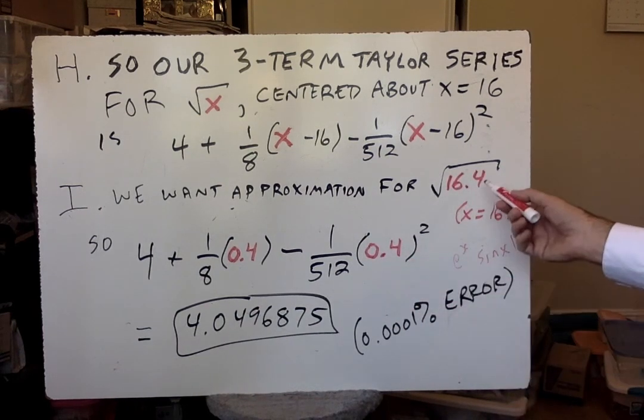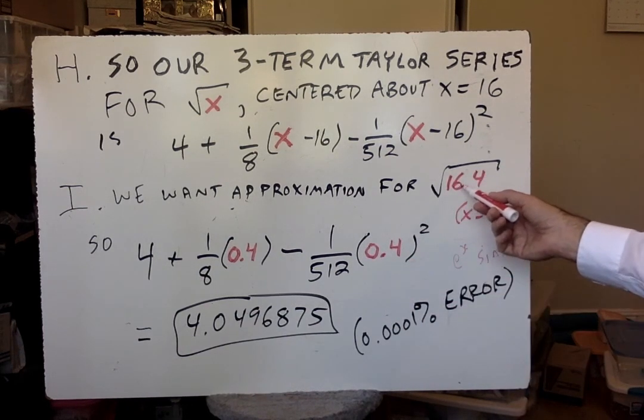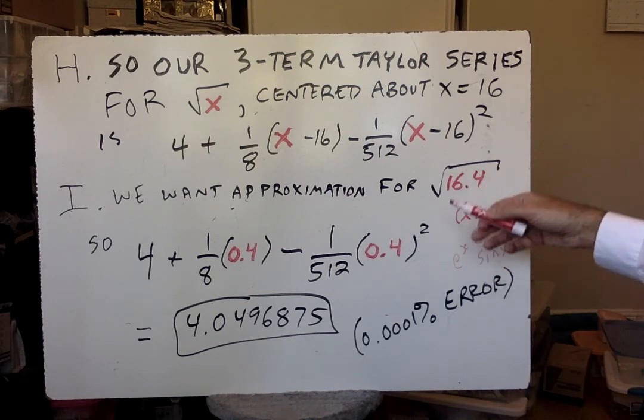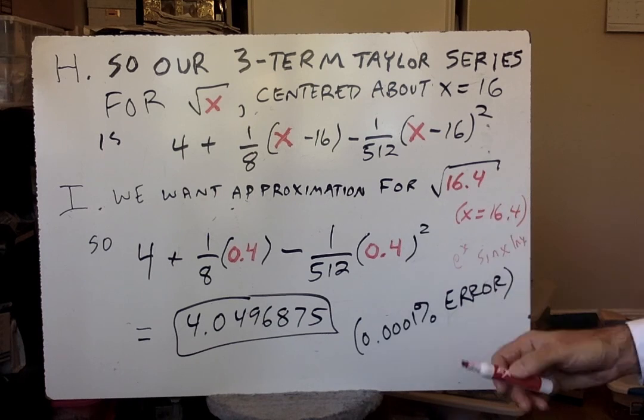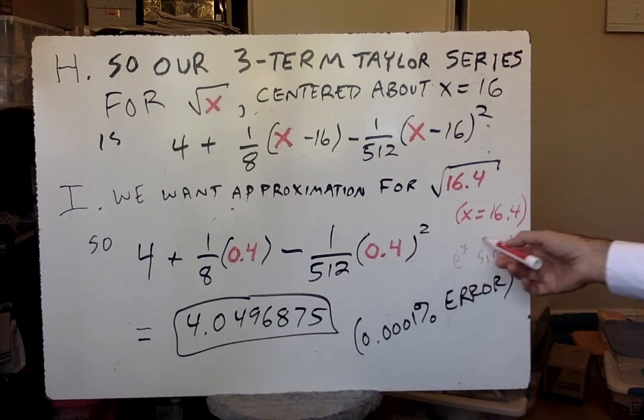And part of the reason the error is so small is that we're relatively close to the value of 16 here, 16.4. If we were further away, say 18 or 19 or 20, the error would be bigger. And to reduce the error, we would want to take more terms.